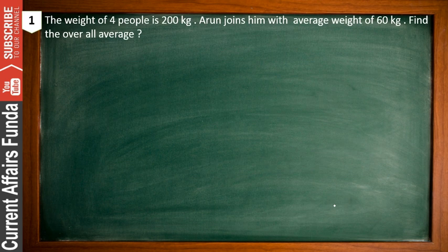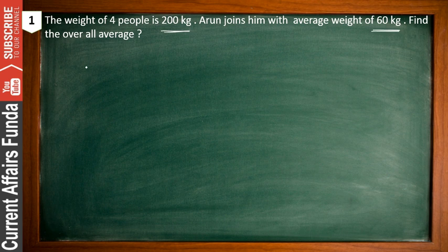Friends, let's discuss some fundamental problems that commonly appear in exams. There is a strong possibility that similar types of questions will appear in your Railway exams as well. This chapter carries significant weightage for Railway, and you can expect two or more questions from it. Our first question: the weight of four people is 200 kg. Arun joins them with a weight of 60 kg. Find the overall average.